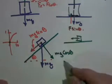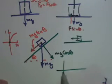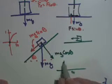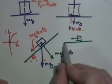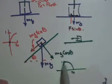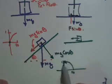The component that's trying to crush the ramp is mg cosine theta. Because cosine, the cosine curve, from 0 to 90 degrees, starts at 1 and goes down to 0.